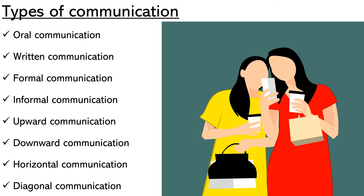Next: upward, downward, horizontal, and diagonal — these are the flows of communication based on levels in the organization. Upward means from subordinate to superiors, to top-level management. Downward communication — usually in all organizations — flows from top management down to lower-level management and subordinates. Horizontal means communication happening between employees of the same level. Diagonal means from one level to a different level — people from different departments interacting with each other because all activities are interrelated.